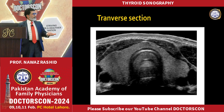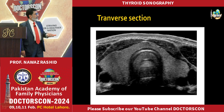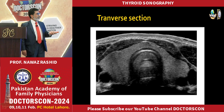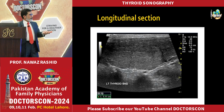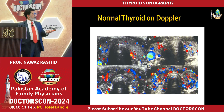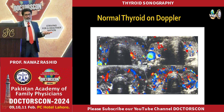This is the longitudinal section — this is the right lobe of the thyroid, this is the left lobe, and it is hyperechoic to the surrounding muscles. The normal thyroid on Doppler shows quite adequate blood flow.